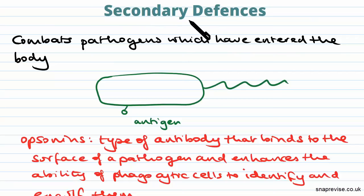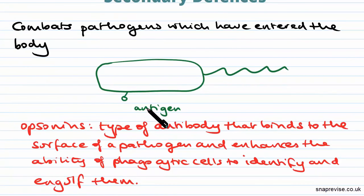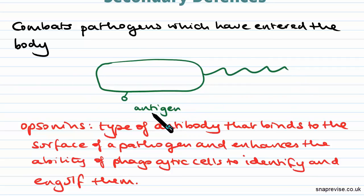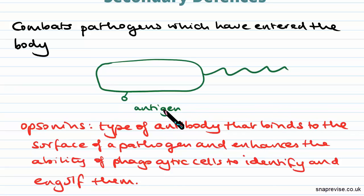Before we jump into them, let's take a look at a couple of terms. Firstly, the term antigen. Antigens are any kind of marker on any kind of cell — pathogens all have specific antigens, and even our own cells have antigens. Antigens convey quite a lot of information, and our bodies are capable of recognizing our own antigens as self antigens, and therefore they do not attack them.